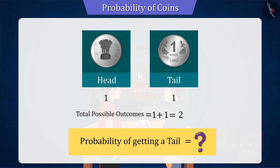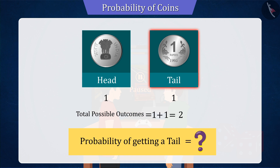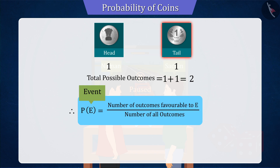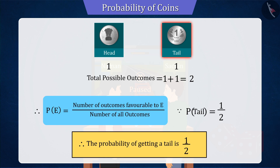As we know that tossing a coin gives two possible results, out of which there is only one possibility of tail. The probability of event E is equal to the number of favourable outcomes of the event upon the number of all possible outcomes. Therefore, we can say that the probability of getting a tail will be 1 by 2.